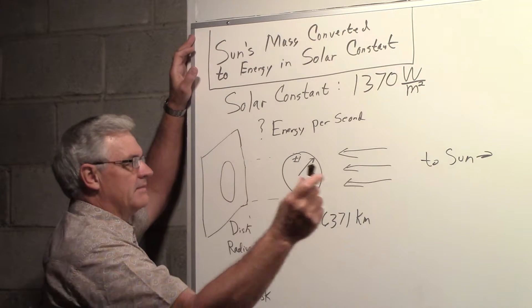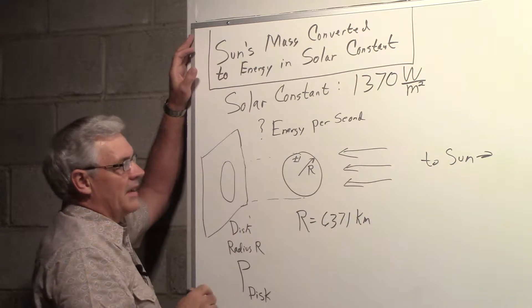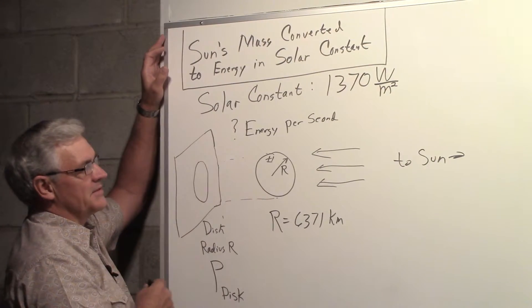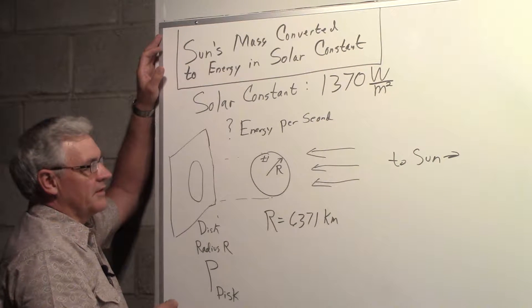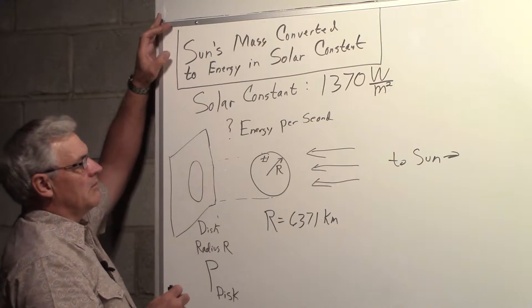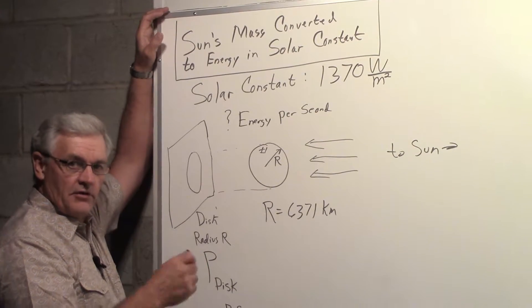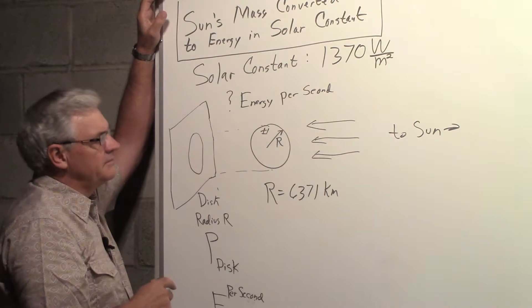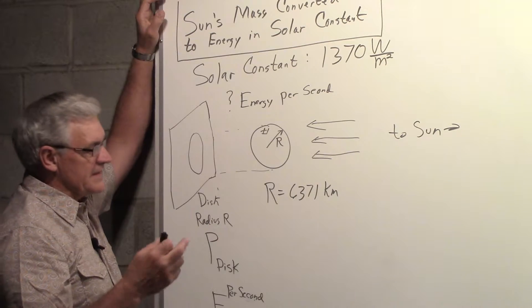So at the distance of the Earth from the Sun, the amount of power falling on any square meter at that distance from the Sun is 1,370 watts. To figure out how much of the solar mass is being converted to energy for that solar constant, we need to find something that we might want to call the energy per second.